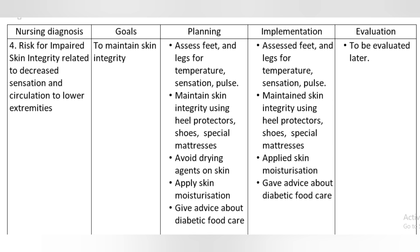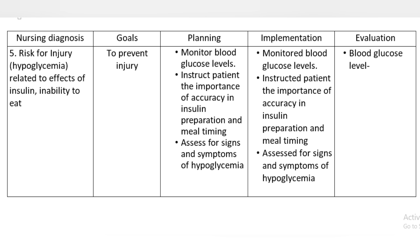Nursing Diagnosis 4: Risk for impaired skin integrity, related to decreased sensation and circulation to lower extremities. Goal: to maintain skin integrity. Planning and Implementation: assess feet and legs for temperature, sensation, and pulse; maintain skin integrity using heel protectors, shoes, and special mattresses; avoid drying agents on skin; apply skin moisturization; give advice about diabetic foot care. Evaluation: to be evaluated later.